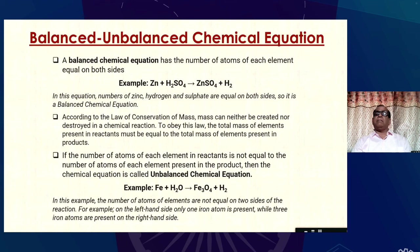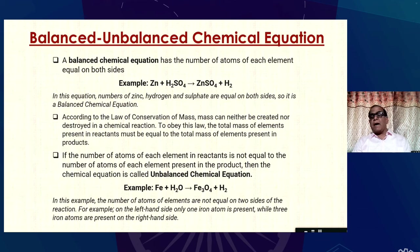What are balanced and unbalanced chemical equations? A balanced chemical equation has the number of atoms of each element equal on both sides. In the zinc and sulfuric acid equation, zinc, hydrogen, and sulfate are equal on both sides, so it is balanced. According to the law of conservation of mass, mass can neither be created nor destroyed, but it can be converted from one form to another. The total mass of elements in the reactants must equal the total mass in the products. If the number of atoms of each element in the reactants is not equal to those in the products, then the equation is called an unbalanced chemical equation.